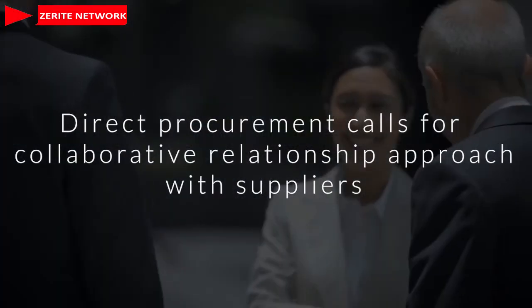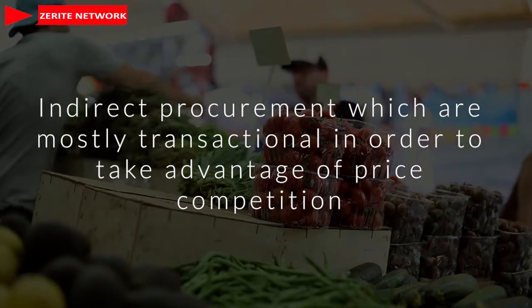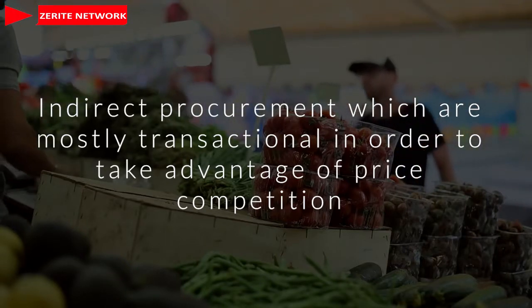Number three, direct procurement calls for a collaborative relationships approach with suppliers, since it is likely to be long-term. If you're producing something for a very long time, you need to be in a good relationship with your suppliers to ensure a steady supply of raw materials. That is not the same with indirect procurement, which is mostly transactional in order to take advantage of price competition.